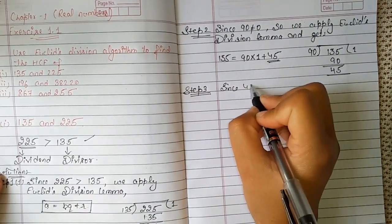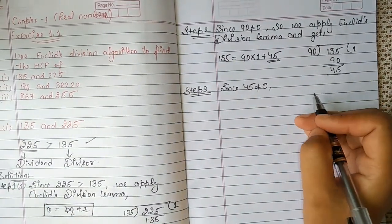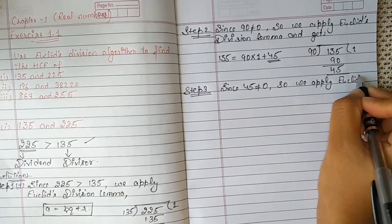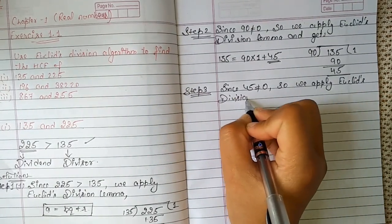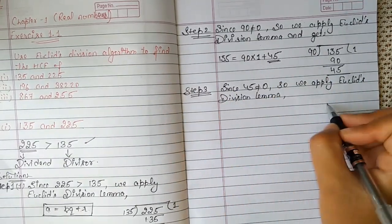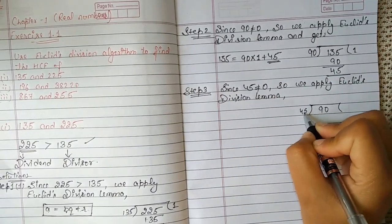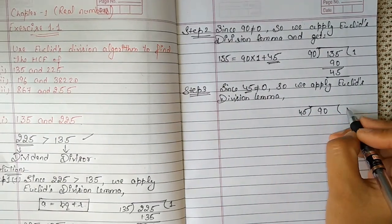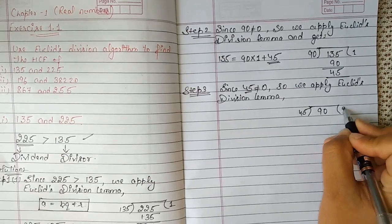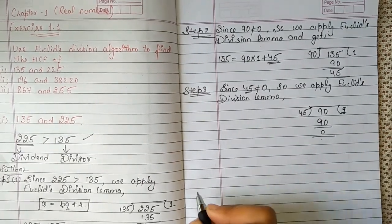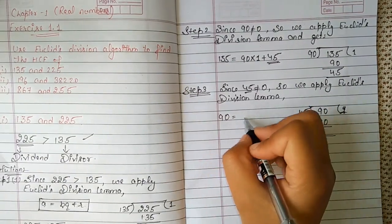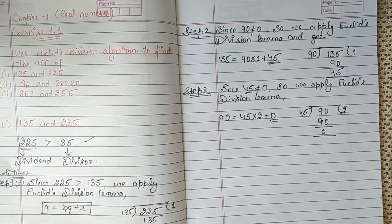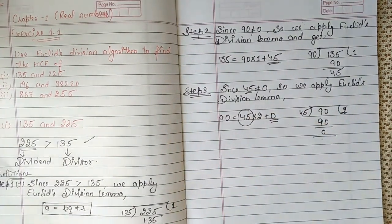So we proceed to step 3. Again we write: since 45 is not equal to 0, so we apply Euclid's Division Lemma again. Now we divide 90 by 45. The divisor becomes dividend and the remainder becomes divisor. 90 equals 45 multiplied by 2 plus 0. Now when 0 comes, our procedure stops. The divisor at this point becomes our HCF.